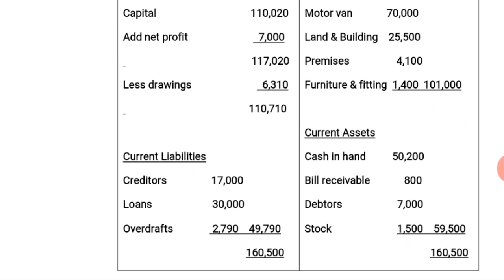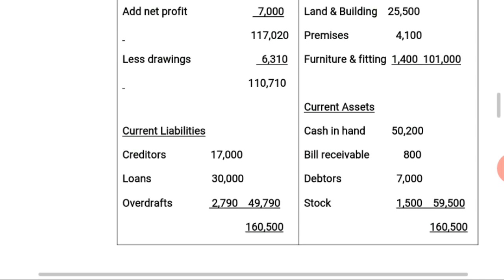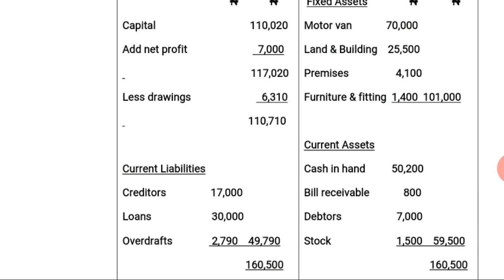Next we look at current liabilities. The items are: creditors 17,000 Naira; loans 30,000 Naira; and bank overdraft 2,790 Naira. These total 49,790 Naira as current liabilities. Adding the current liabilities to the capital employed of 110,710 Naira, we arrive at a total of 160,500 Naira on the left-hand side.